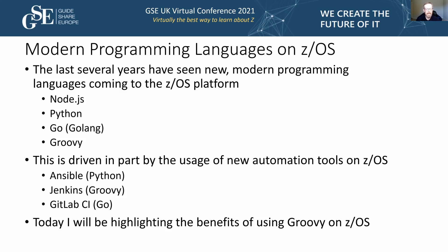GitLab CI is another cloud-based Git repository like GitHub or Bitbucket, and GitLab has also branched into the CI/CD pipeline space as a competitor to Jenkins. Where Jenkins has a remote agent running on USS in Java, GitLab CI also has an agent that runs on the box written in Go. IBM recently ported Go to USS, primarily to get GitLab's agent running on USS.